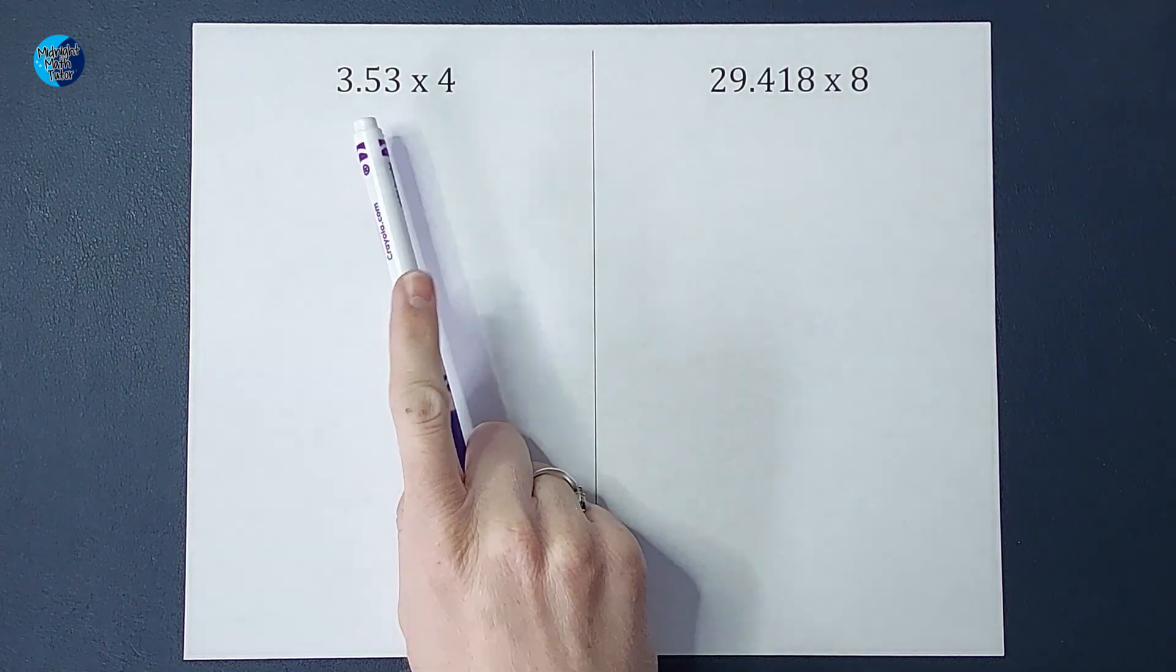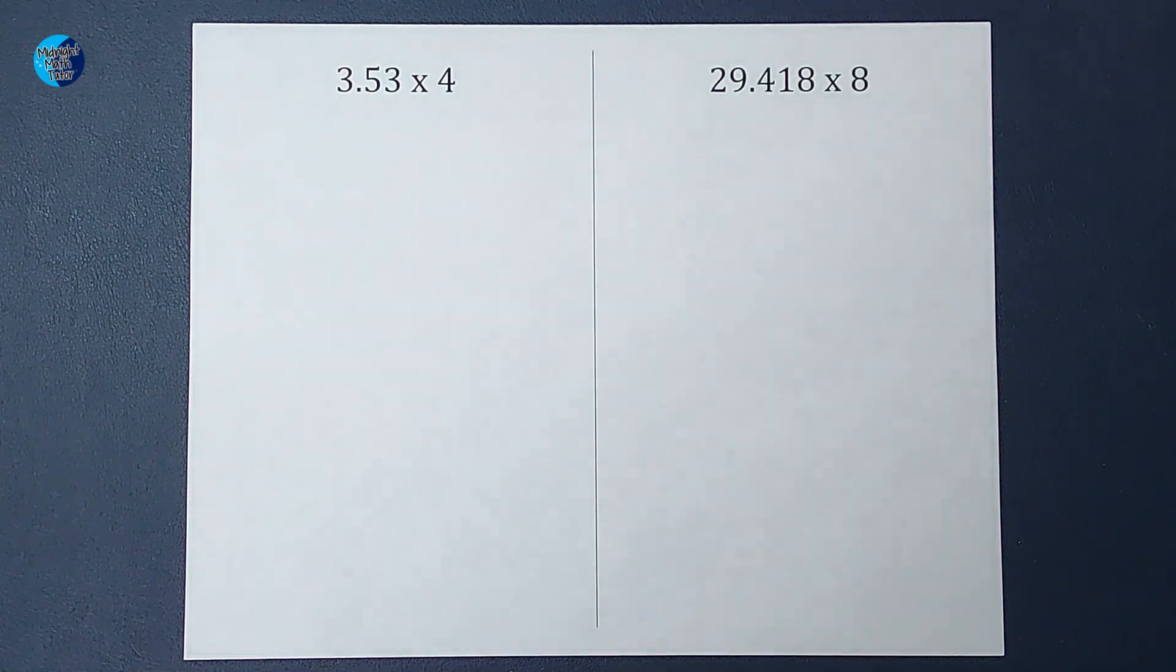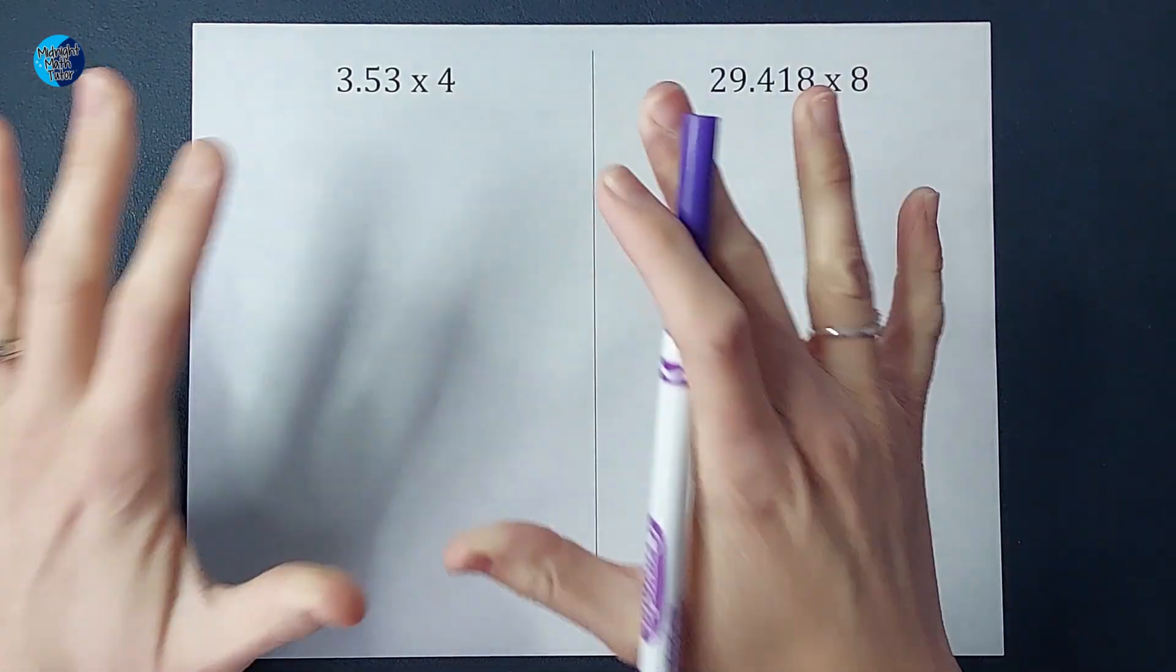Hey guys, we are going to multiply some decimals by some whole numbers. When we multiply these, guess what? You do not have to line up the decimals.